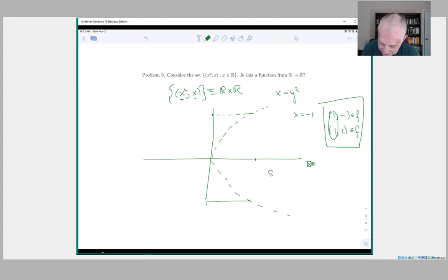So therefore it is not. So since one minus one is in f and one one is in f, this is not a function.